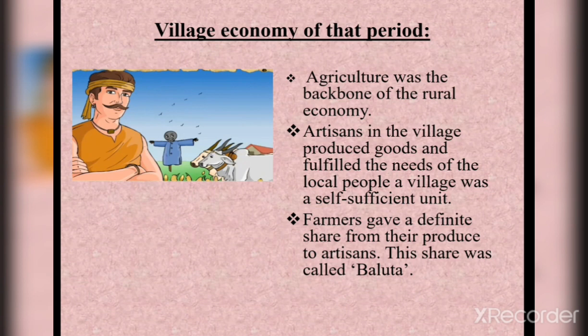Farmers gave a definite share from their produce to artisans. This share was called Baluta. For example, if farmers produced wheat, gram, or groundnut, they would give a share to the artisan. This system was known as the Baluta system.